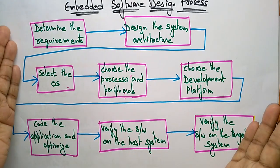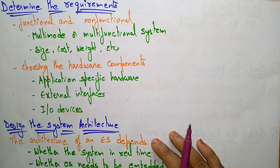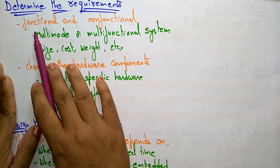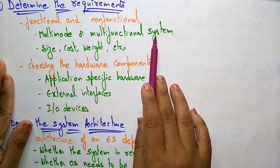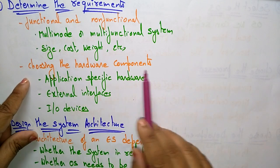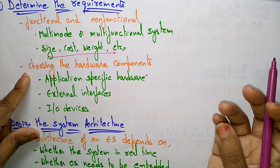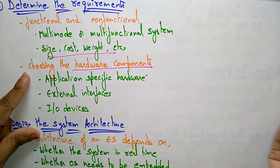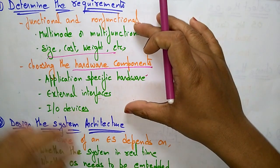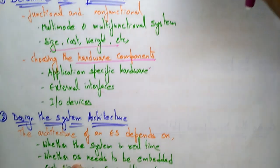Let me explain each step clearly. The first step is to determine the requirements for the embedded software. There may be functional and non-functional requirements, such as multi-mode or multi-functional systems. You also need to think about size, cost, weight, and hardware components — including application-specific hardware, external interfaces, and I/O devices you are going to use.